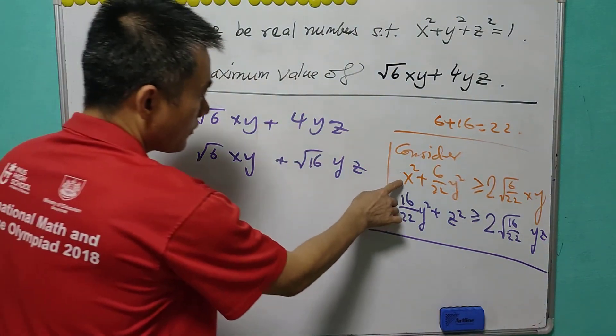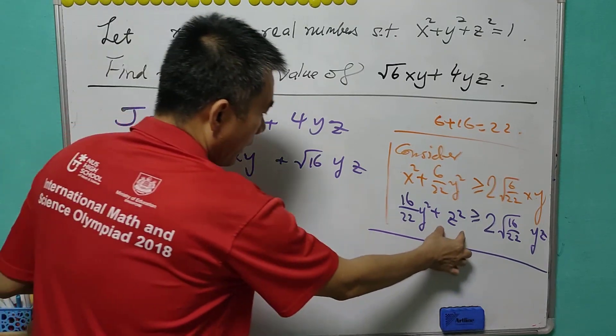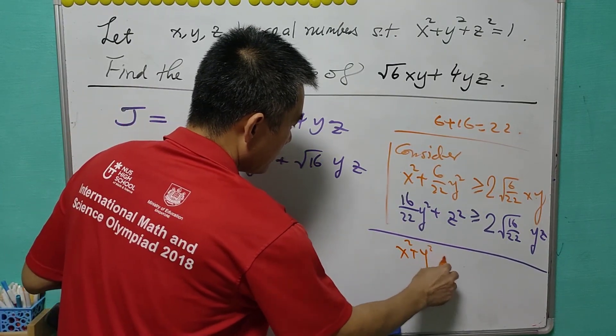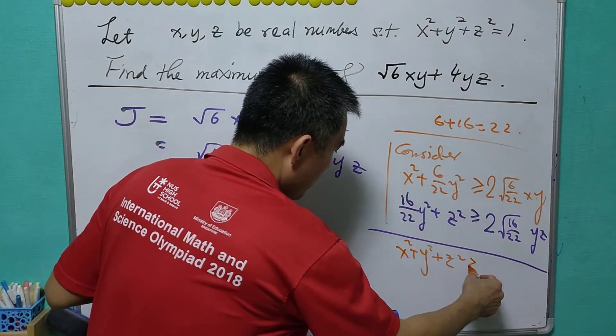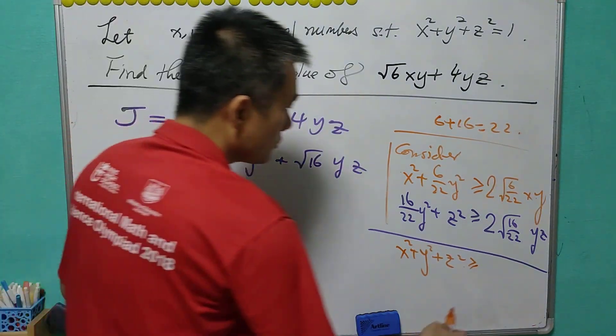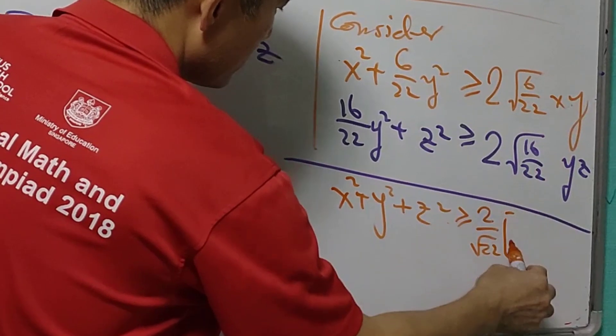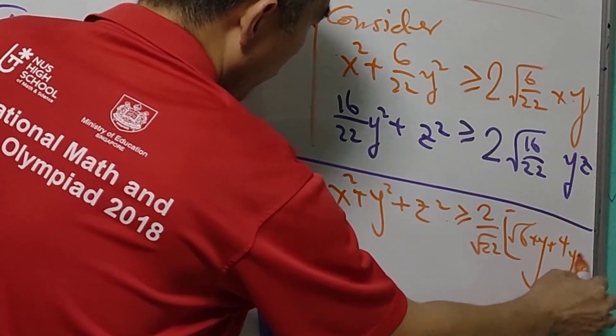Then we'll see that we have x², y², and z². So the left-hand side is equal to x² + y² + z². And for the right-hand side, it will be equal to (2/√22) times (√6xy + 4yz).